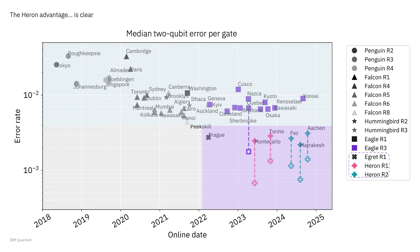This picture really shows the Heron Advantage in full, clear view. We've shown the progress over time with Falcon and Eagle for cross-resonance devices, but Heron is just another level of improvement. It lets us push down to the 1e-4 level, and that's going to power our extensions for the future part of our roadmap as we push out to deeper and more accurate circuits.